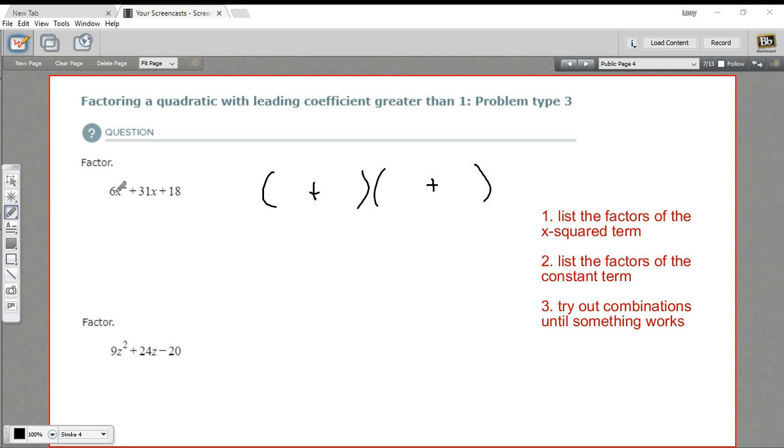Then I list the factors first of my leading coefficient here, so 6 is what I've got. Factors could be 1 and 6 or 2 and 3. And 18 could be 1 and 18 or 2 and 9 or 3 and 6. I think that's all of them. And now I'm going to just start plugging them in here.